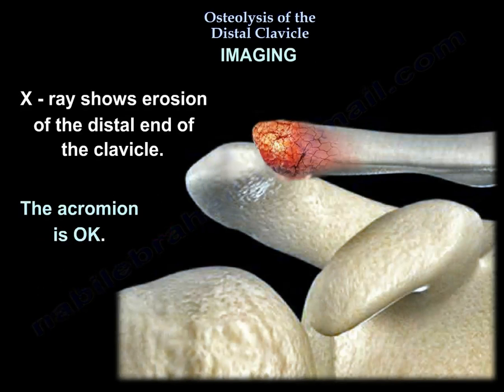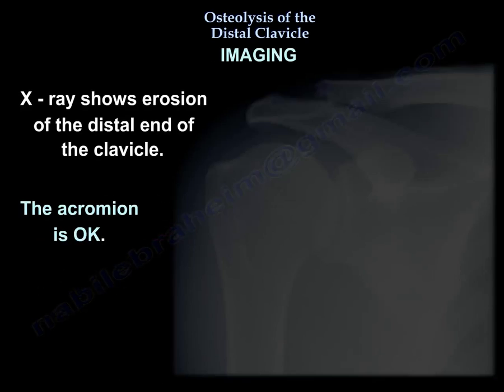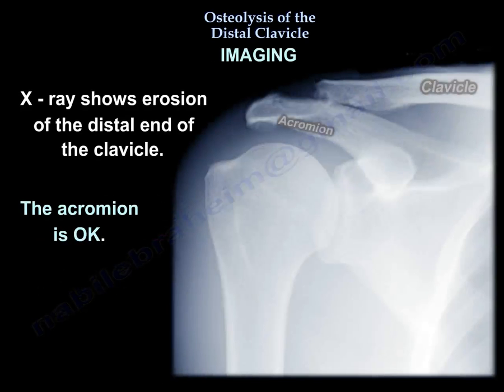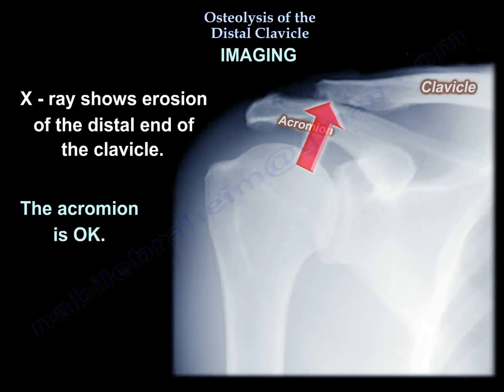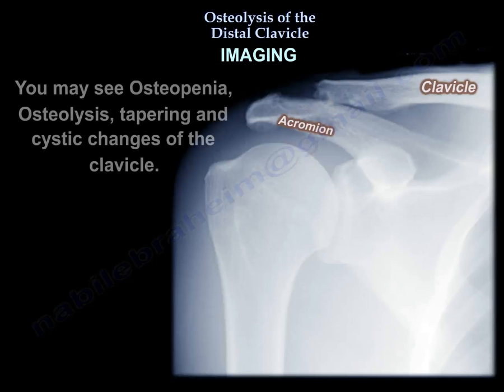X-ray will show erosion of the distal end of the clavicle. The acromion will be okay. You may see osteopenia, osteolysis, tapering, and cystic changes of the clavicle.